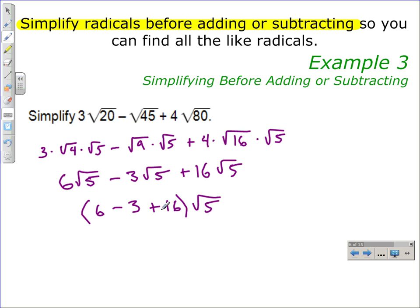We just have to complete the arithmetic on 6 - 3 + 16. 6 - 3 is 3, and 3 + 16 is 19, so this simplifies to 19 square roots of 5.